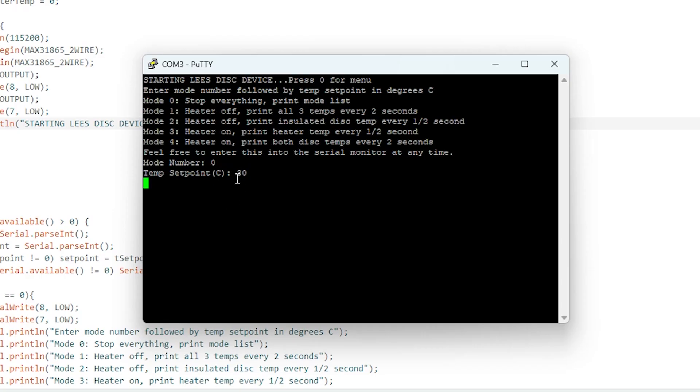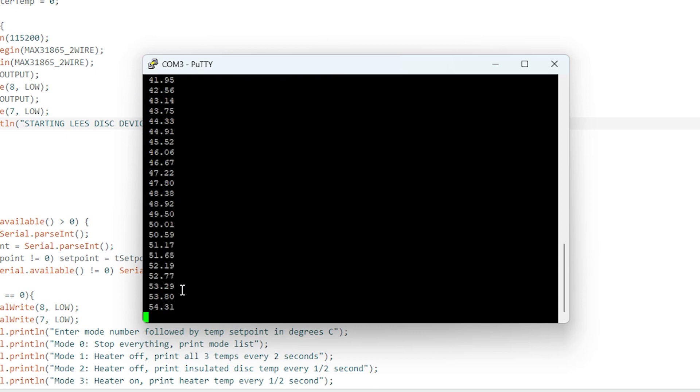Right now it's at mode 0 and the temperature set point is at 30 degrees Celsius. So to find this rate of change of temperature of the top brass disk I'm going to set this to let's say 200 degrees Celsius. So I'll press mode 3 and then 200. So we're now in mode 3 and the temperature set point for the device is 200 degrees Celsius. And you can see that these numbers are starting to rapidly rise. This is the temperature probe inside the heater.